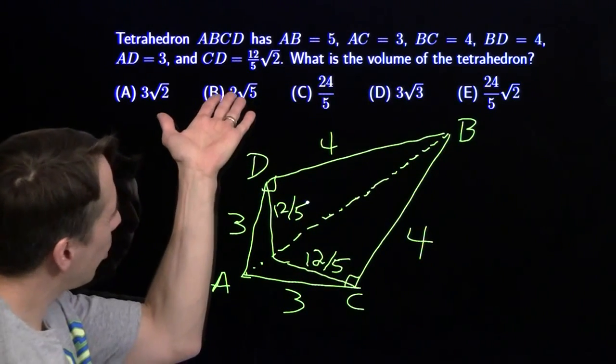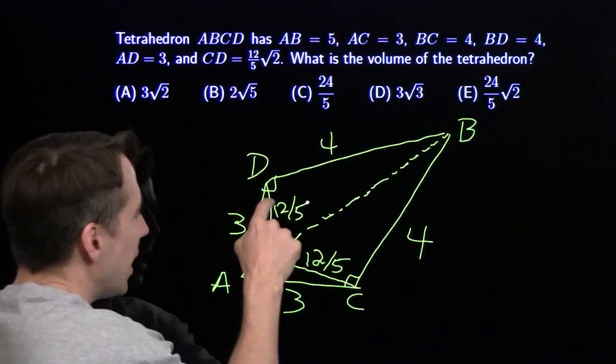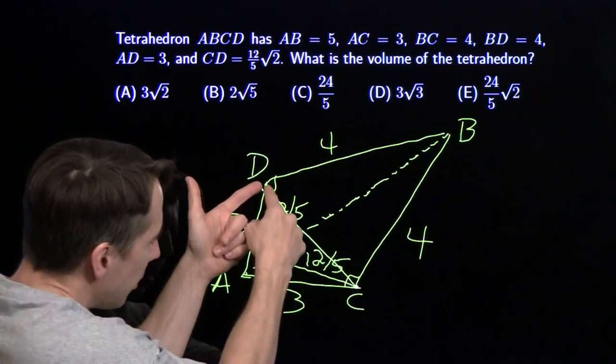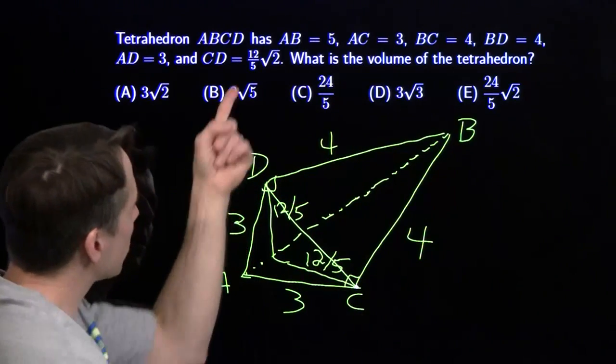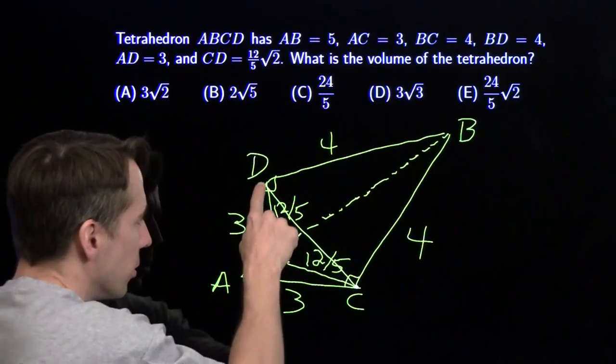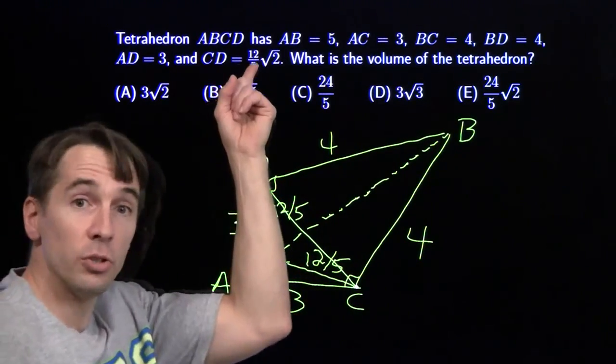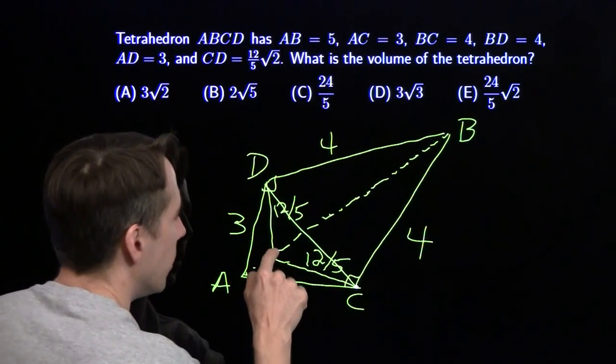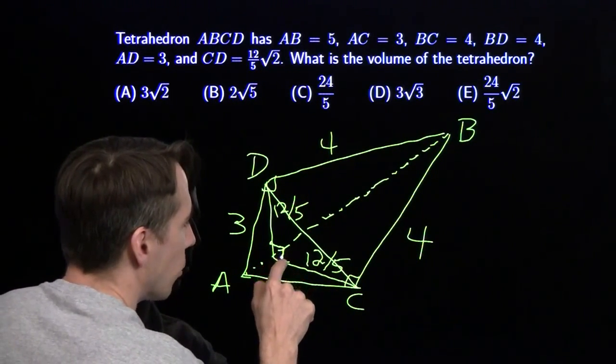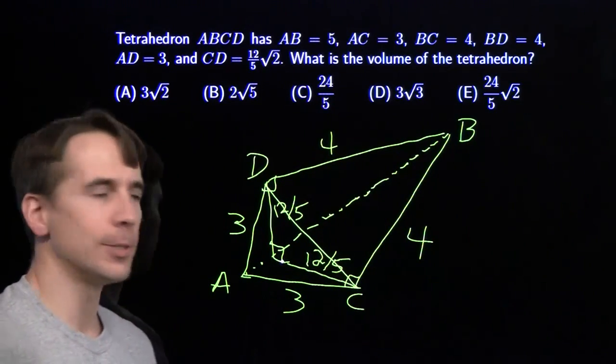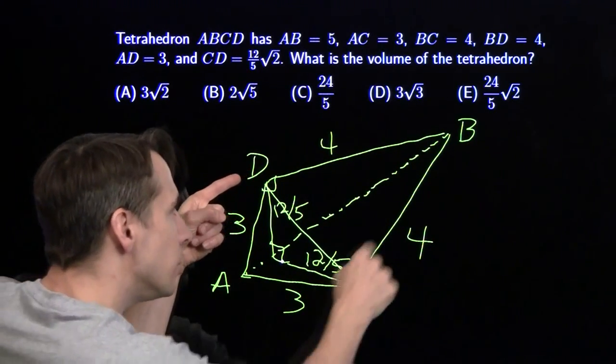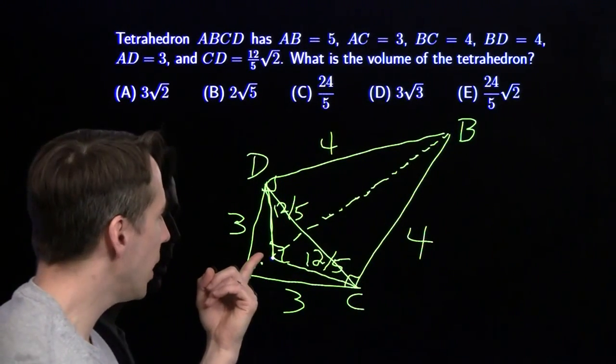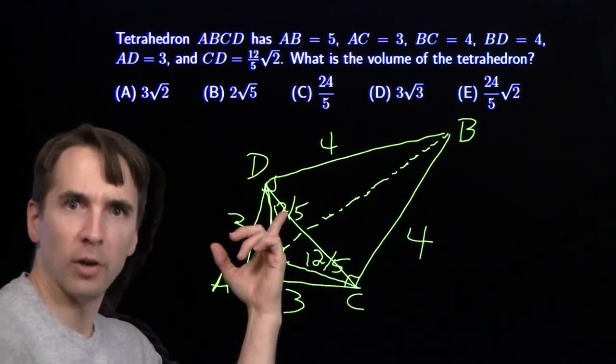And now when we draw in this last edge, we make a bit of a mess, but we start to see the whole picture. This length, this segment right here, is length twelve-fifths root two. So this triangle right here, twelve-fifths, twelve-fifths, twelve-fifths root two, is a 45-45-90 isosceles right triangle, this right angle sitting right there. And now we know where that elusive altitude is. The altitude from D down to ABC is this altitude right here that we've had sitting in the diagram already. And we know its length. Its length is twelve-fifths.